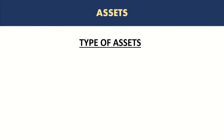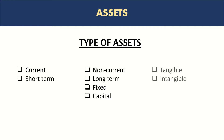Let's look at types of assets. Broadly, there are three categories of assets. Two of them are based on time — whether the assets are expected to be realized in the short term or the long term — and the third one is whether the assets are tangible or not. Let's go through them one by one.